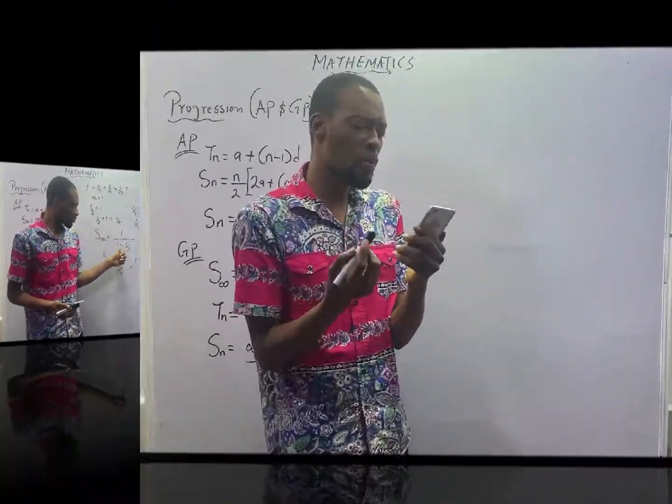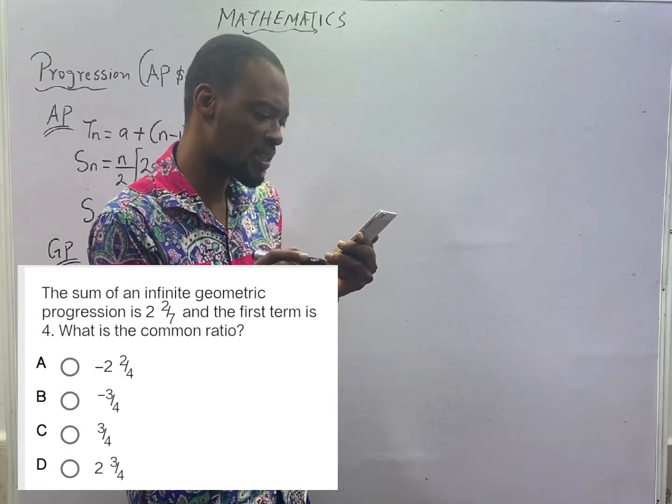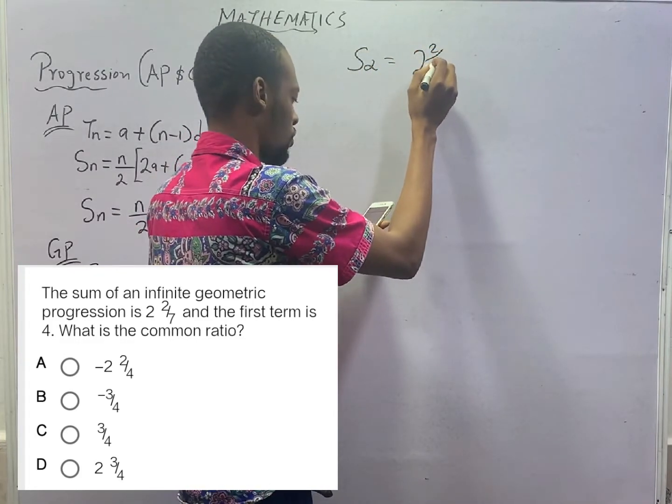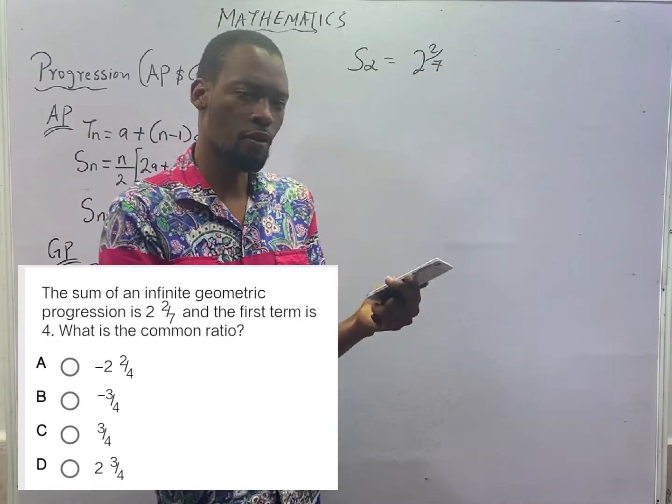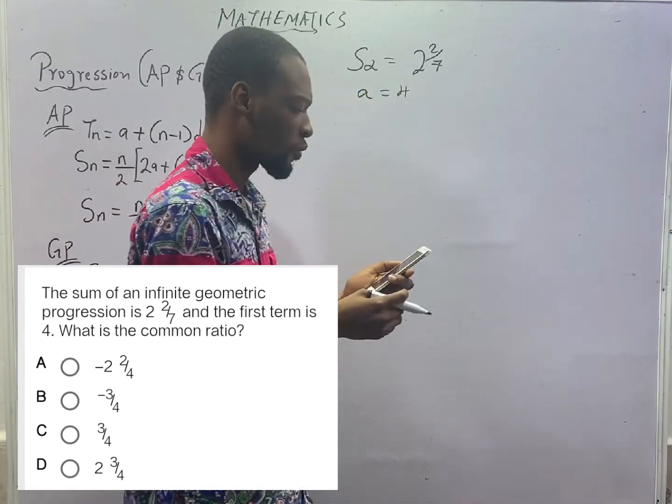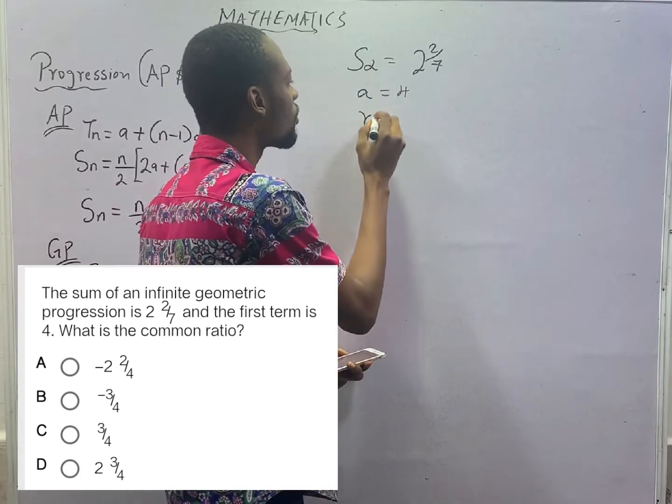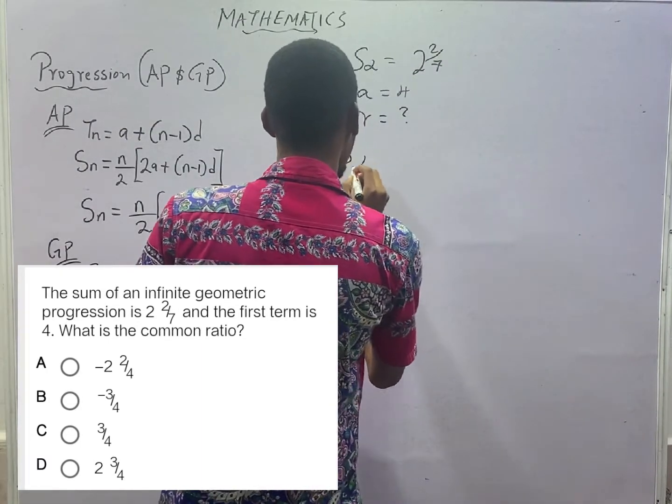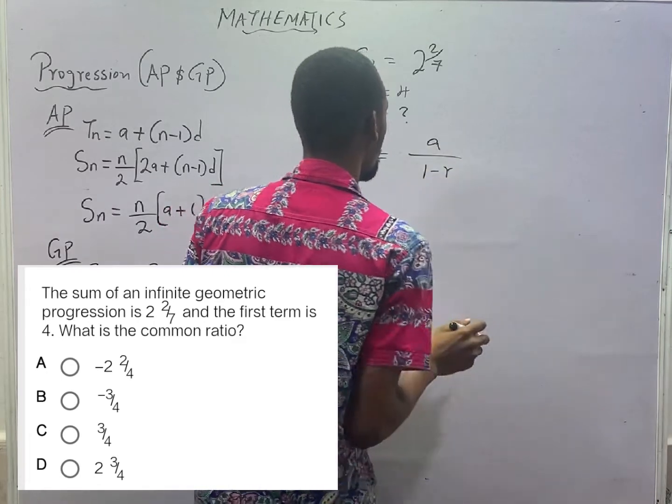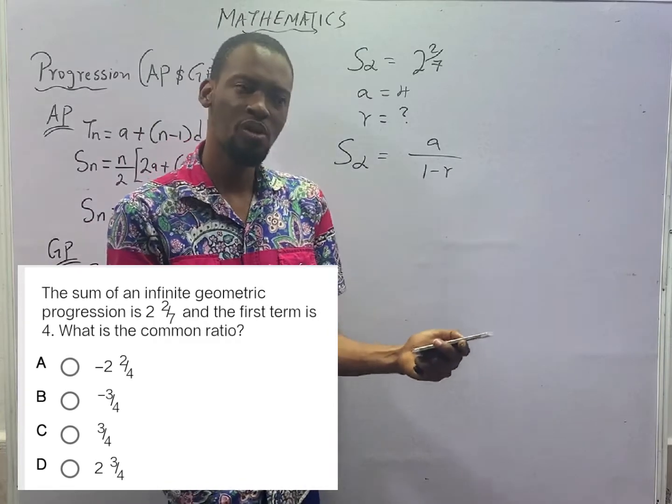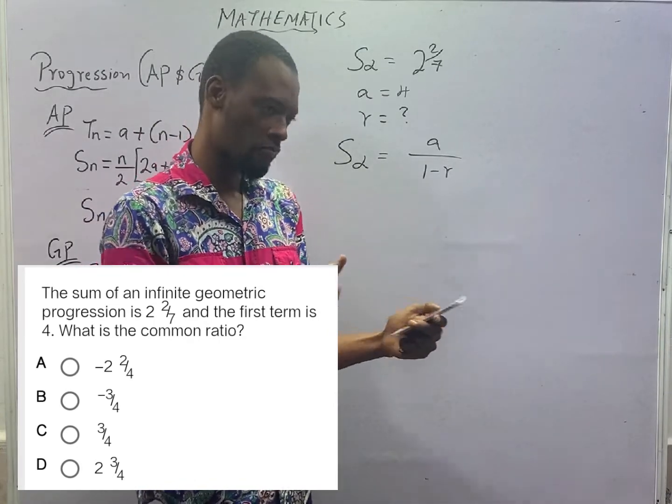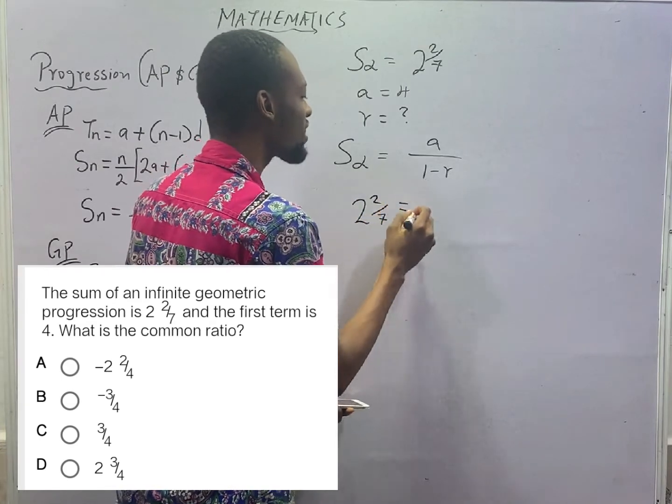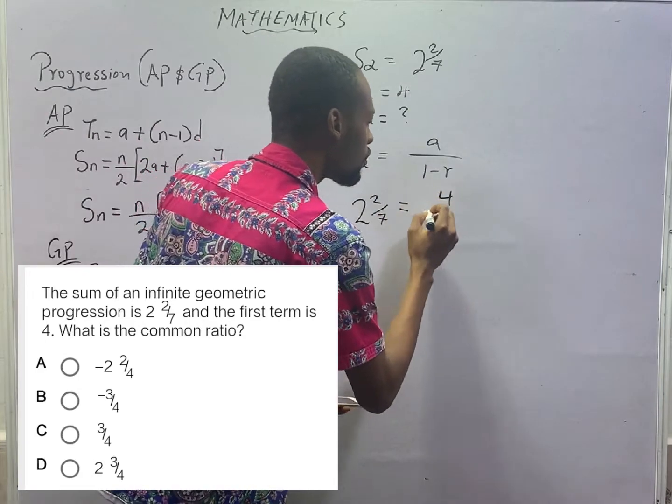Now look at this. The sum of an infinite geometric progression is 2 and 2/7, and the first term is 4. A equals 4. What is the common ratio? Sum to infinity is A/(1-R), right? Now, they are not telling you to find the sum to infinity. They gave you the sum to infinity. They said this is 2 and 2/7, and the first term is 4, which is 4/(1-R).